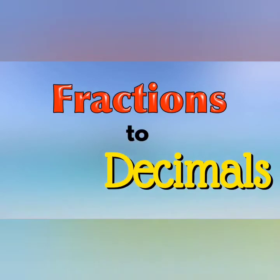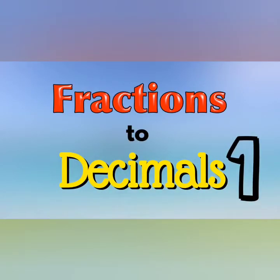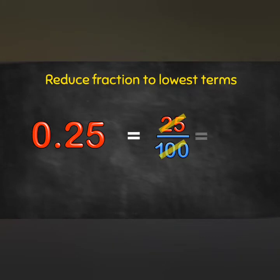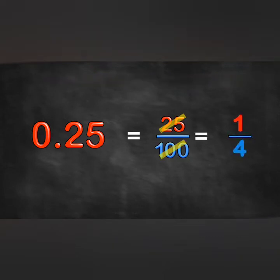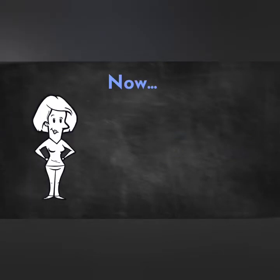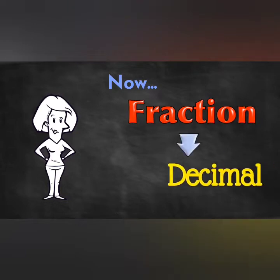You've changed decimal numbers into fractions. You've reduced those fractions to lowest terms. You've also changed decimal numbers with whole number parts, and of course, that gives you a mixed number in the answer. Now we're going to go the other way. I'm going to show you how to turn a fraction into a decimal.